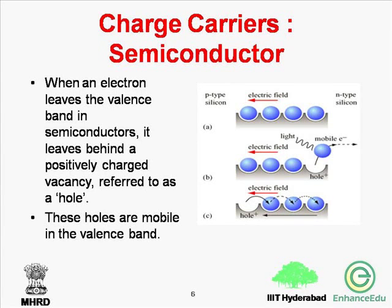When electrons leave the valence band, they leave behind a positively charged vacancy referred to as a hole. Holes are mobile in the valence band, and an electron and its corresponding vacancy in the valence band collectively form an electron-hole pair. Hence, semiconductors have two types of charge carriers: electrons in the conduction band and holes in the valence band.